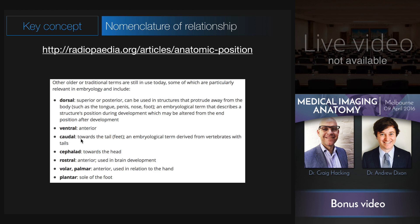Caudal refers towards the tail, and is more of an embryologic term describing vertebrates that develop with tails. Encephalad, meaning towards the head, is the opposite of caudal. Rostral is another term used for brain development, referring to anterior. In the upper limb, we use terms such as volar or palmar, referring to the anterior margin or surface of the hand or forearm. In the lower limb, we use the word plantar to refer to the sole of the foot, with the opposite being the dorsum of the foot.